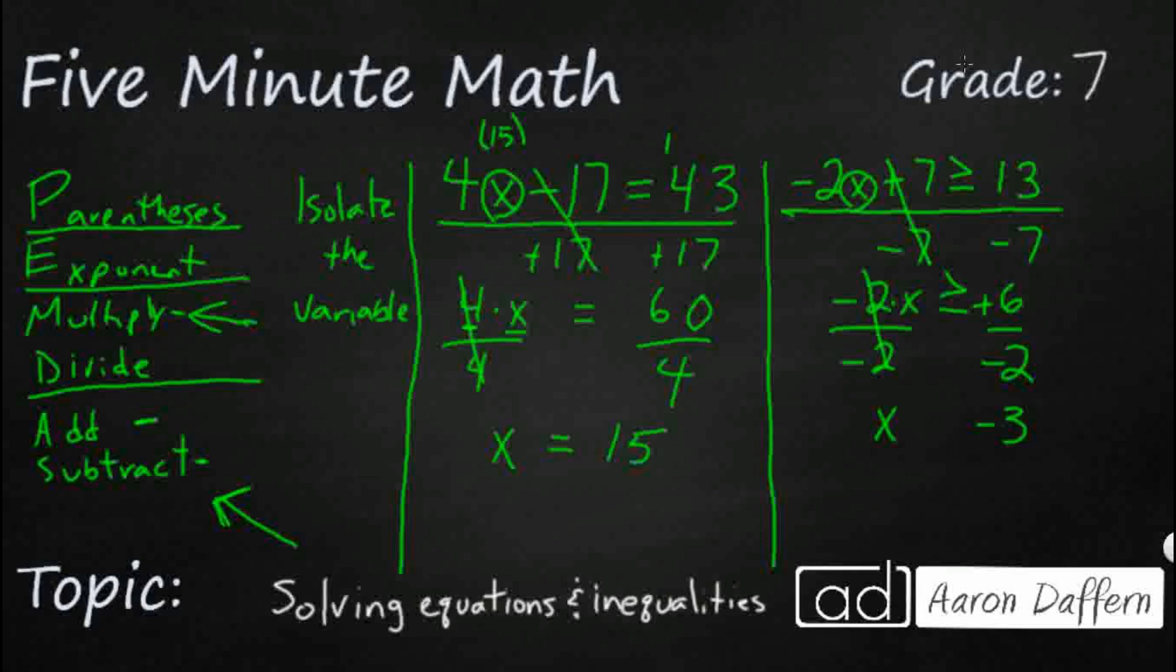Now, something strange happens when we are solving for a variable in an inequality, greater than, less than. In this case, it's a greater than or equal to, and we multiply or divide by a negative. Whenever you multiply or divide by a negative, you actually flip or reverse the inequality. So this is going to be x is less than or equal to negative 3. And that is going to be the solution. Remember, whenever you multiply or divide by a negative, you are going to reverse the inequality.